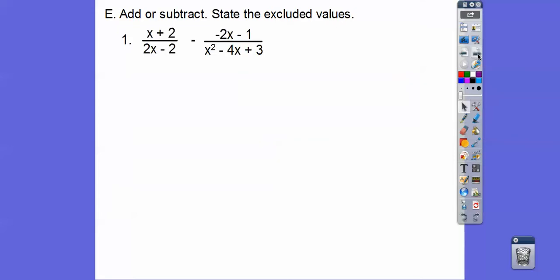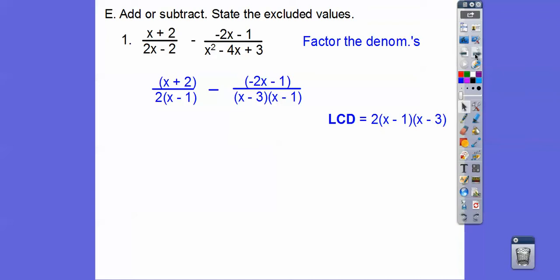Add or subtract and state the excluded values. So we have to get common denominators here. When you get rid of the denominators, that's when you're solving, when there's an equal sign. This one doesn't have an equal sign, so we've got to have common denominators. So there's our denominators. So our lowest common denominator is every factor. That factor, that factor, that factor. So it's going to be 2, x minus 3, x minus 1. So we're going to multiply each fraction by 1, but it's going to be the missing piece. This one's missing the x minus 3, so x minus 3 over x minus 3. This is missing the 2, so 2 over 2.